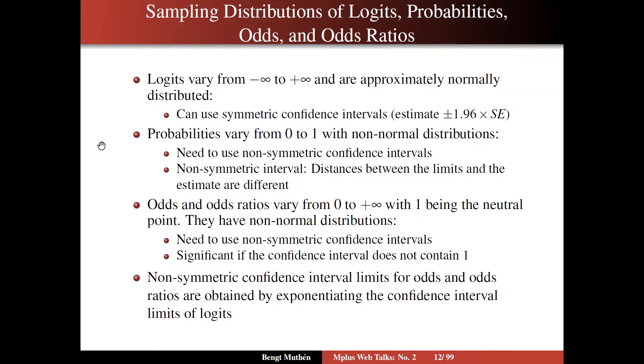Now in contrast, probabilities vary from 0 to 1, and therefore will likely have non-normal distributions. For normal distributions, you need to use, or you should use, non-symmetric confidence intervals. By a non-symmetric interval, I mean that the distance between the lower limit and the estimate is different from the distance between the estimate and the upper limit. That's in contrast to the regular confidence interval which uses 1.96 times standard error for both the lower and upper limit.